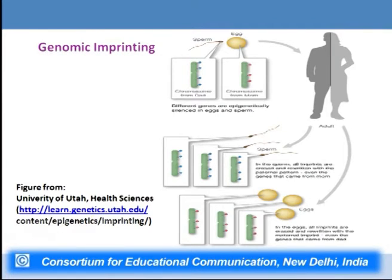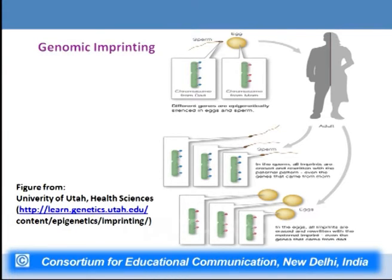During fertilization, sperm-specific imprints are erased and rewritten with the paternal pattern, while egg imprints are erased and rewritten with the maternal pattern. Changes in imprinting occur only during gamete formation — in somatic cells there is no change of imprinting.